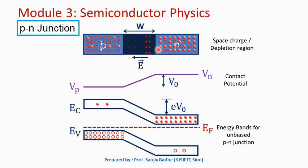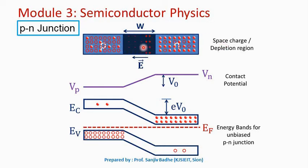The electrons diffusing from the N side to the P side and the holes diffusing from the P side to the N side give rise to diffusion current. The internal electric field created at this region gives rise to drift current. At equilibrium, the diffusion current is balanced by the drift current, so under unbiased condition — when no potential difference is applied across the P-N junction — there will be no net current flowing.